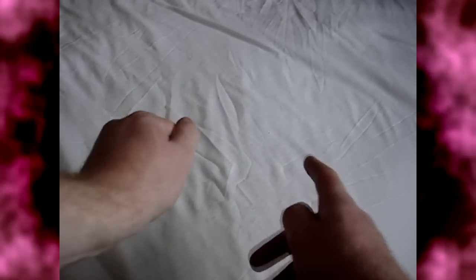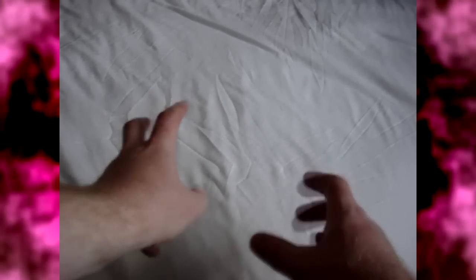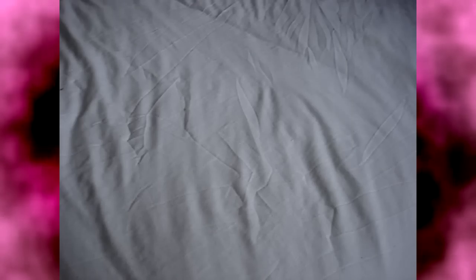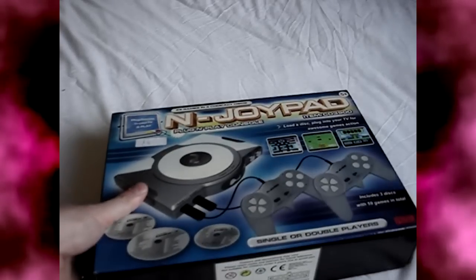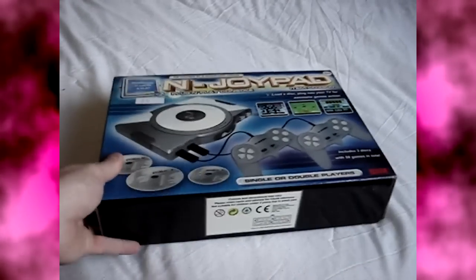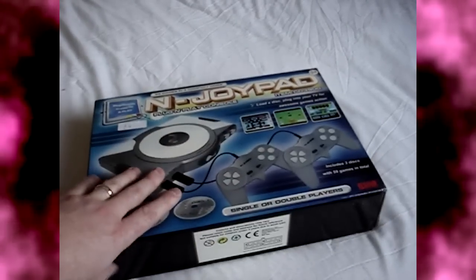That's better. So, the NJ pad. You may be asking yourself, what the hell is that? Well, let's find out. Well, it's this thing. Well, it's not exactly this thing. This is just a box that contains the abomination that's inside. But you knew that anyway.